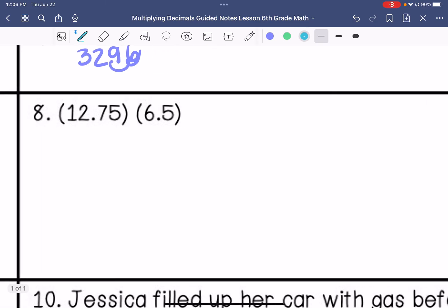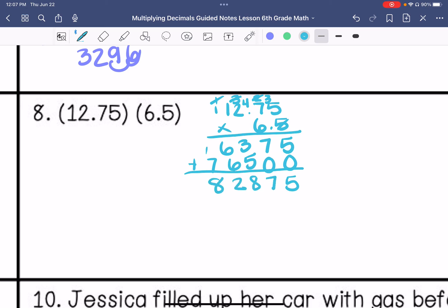Alright, number 8. 12.75 times 6.5. 5 times 5 is 25. 5 times 7 is 35. Plus that 2 is 37. 5 times 2 is 10. Plus that 3 is 13. And then 5 times 1 is 5. Plus that 1 is 6. Put that placeholder there. 6 times 5 is 30. 6 times 7 is 42. Plus that 3 is 45. 6 times 2 is 12. Plus that 4 is 16. 6 times 1 is 6. Plus that 1 is 7. And I have 1, 2, 3 behind the decimal point. 1, 2, 3. So 82.875.